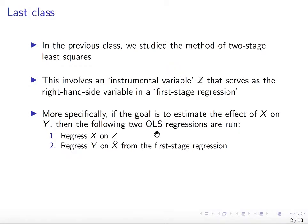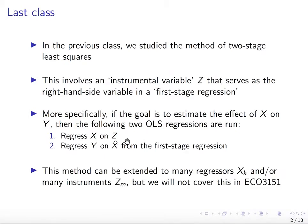The two-stage least squares regression requires you to first regress x on z, retrieve the parameters from this relationship, then predict x-hat, and regress y on the predicted x-hat. Note that we're only looking at a case where we have one independent variable x, but this could be extended to many regressors — though that won't be covered here. You should know that you can extend the two-stage least squares method to several x's, and so you would need several instruments.